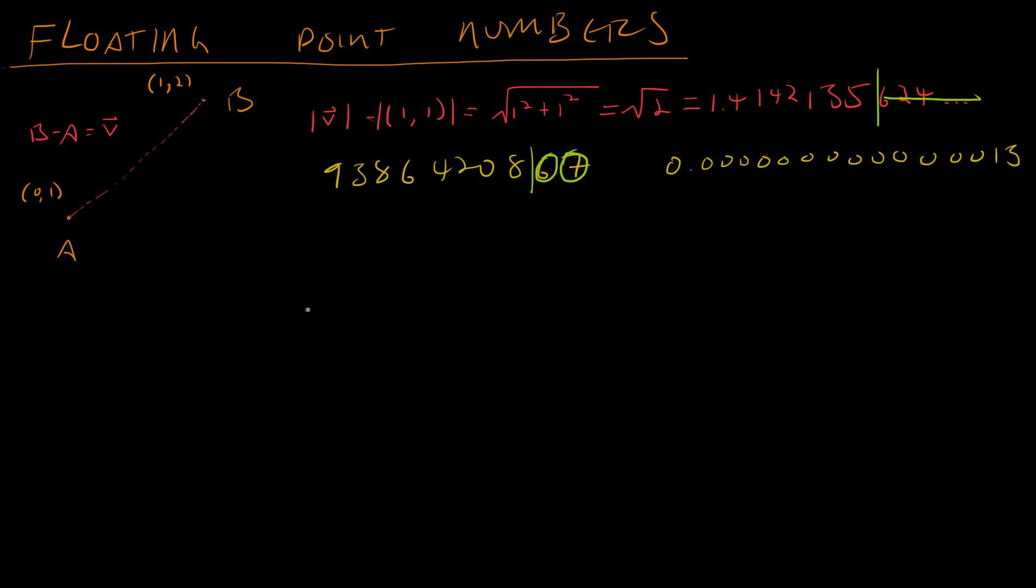So how do they work on the inside? Well, floating point numbers actually use a very simple principle that you may remember from grade school, which is scientific notation. If you remember, scientific notation works like this. You have a number, b times 10 to the e, where b is called the significand, and b is always between 1 and 10. And e is called the exponent. e is always an integer.